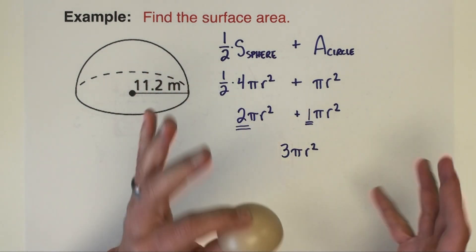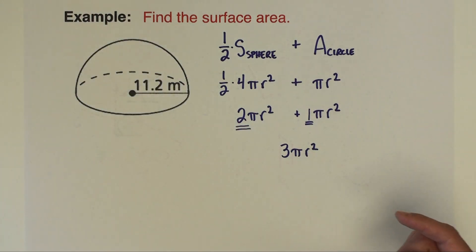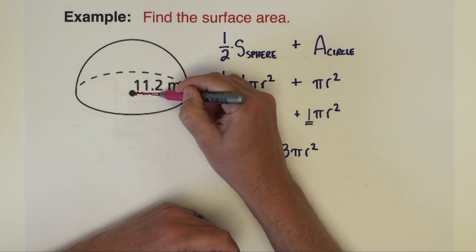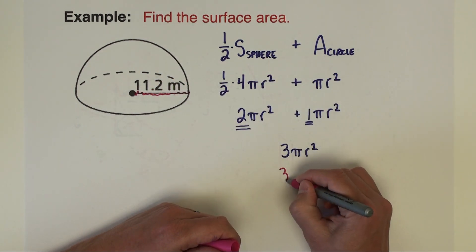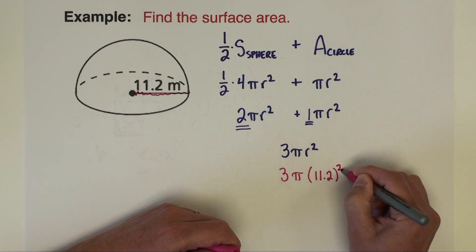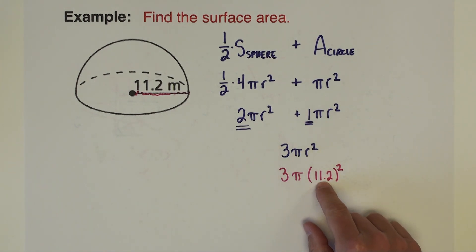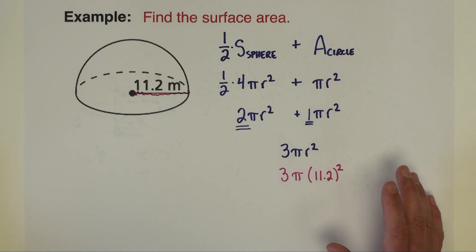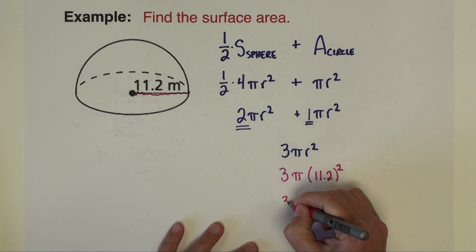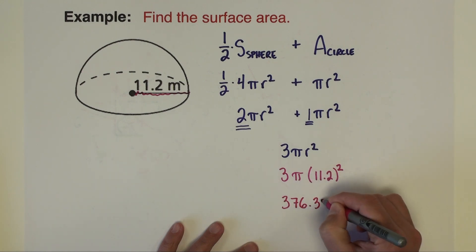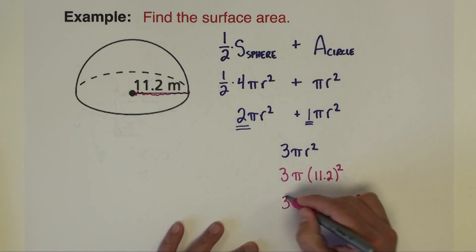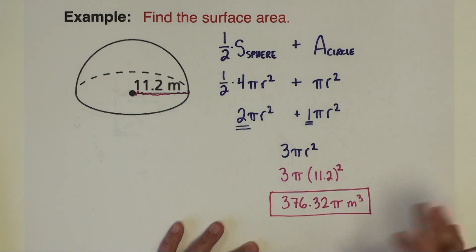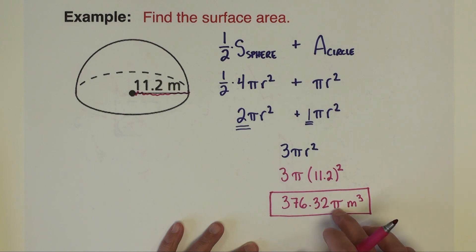So the surface area of a hemisphere is 3πr². The radius of this hemisphere is 11.2, so we do 3π times 11.2 squared. Because the problem was given as a decimal I'll go ahead and put that into the calculator: 11.2 squared times 3 is 376.32. So the exact answer is 376.32π square meters. If you want an approximate answer, just type 376.32 times pi using the pi button on your calculator.